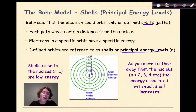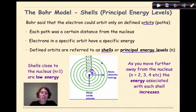An electron found in the lowest shell would have a low energy, but an electron found in a shell that was much farther away from the nucleus had a higher energy.